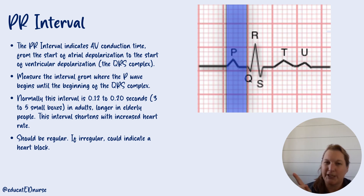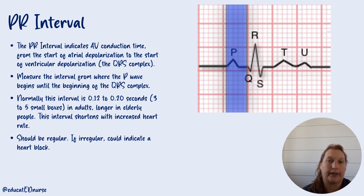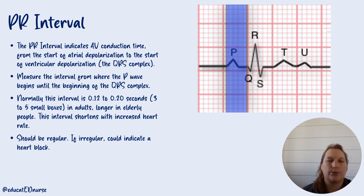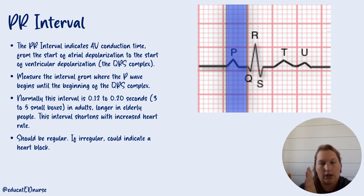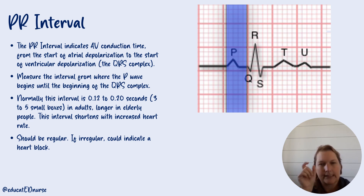The PR interval — or PQ interval — indicates AV conduction time from the start of that contraction all the way to when the ventricles are going to start to depolarize. It's the start of the P to the start of the QRS. Normally it's going to be 0.12 to 0.20 seconds, so three to five small boxes. It should be regular. If it gets longer and longer progressively, that could indicate a heart block, so the PR interval should be a consistent interval throughout the strip.